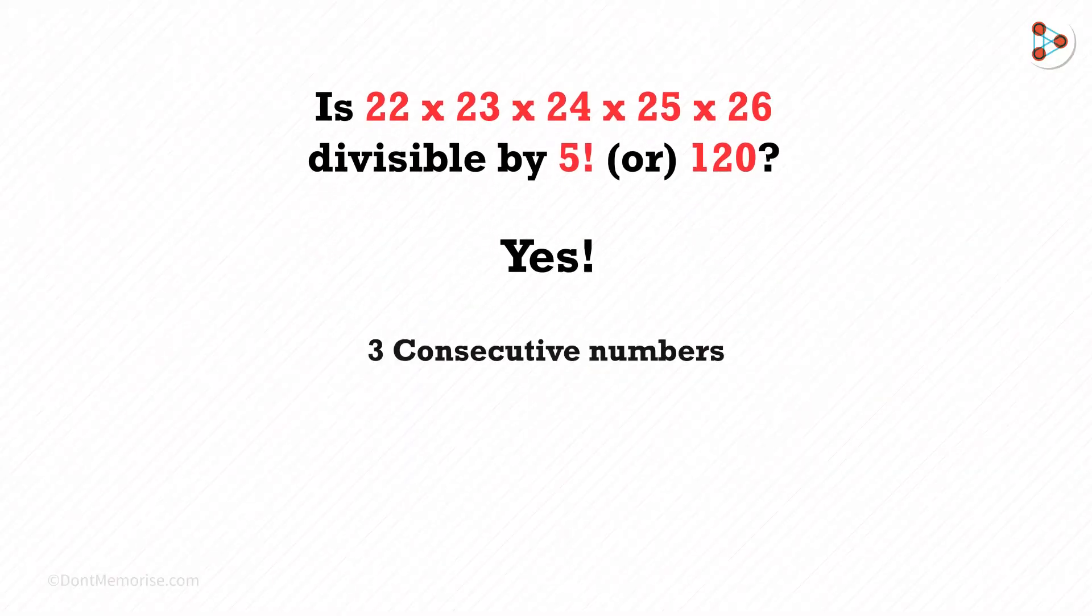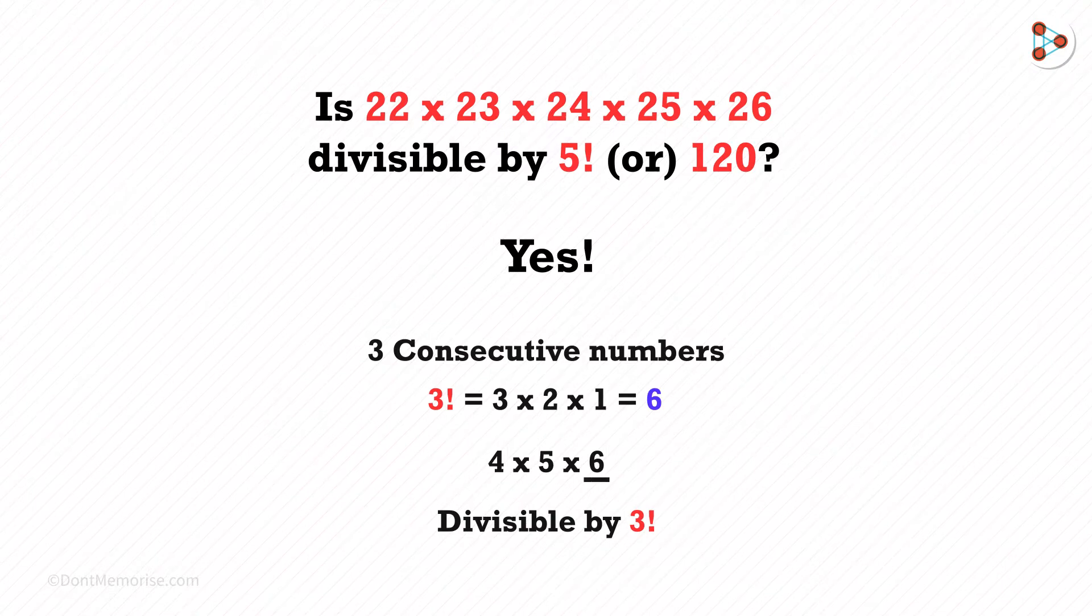Let's see, the product has 3 consecutive numbers: 4 multiplied by 5 multiplied by 6. And it says that 3 factorial is 3 times 2 times 1, which is 6. But if you think about this product, you can find that it is definitely divisible by 3 factorial, because we have 6 here. And the other product has 3 consecutive numbers.